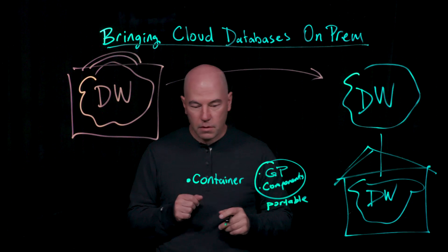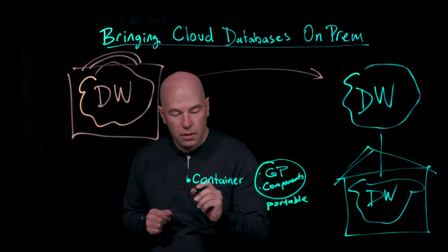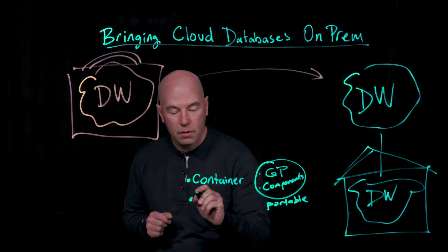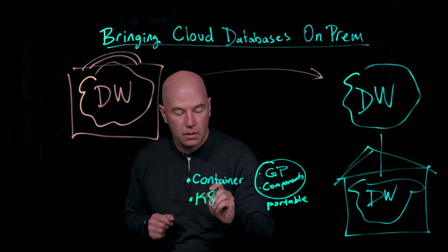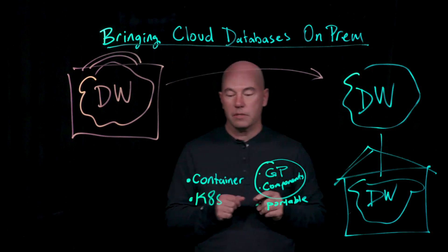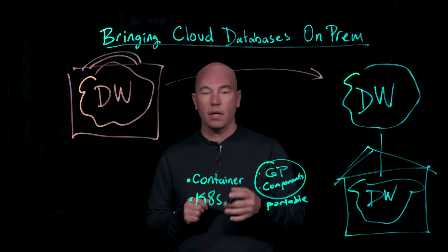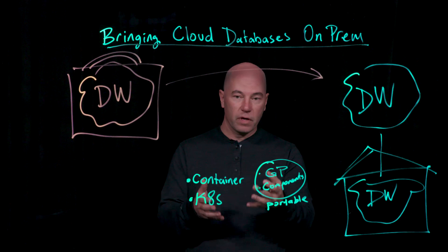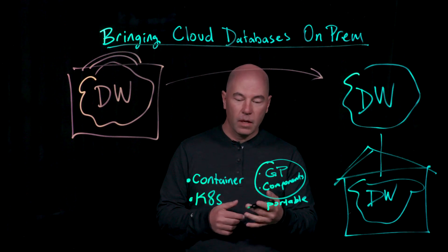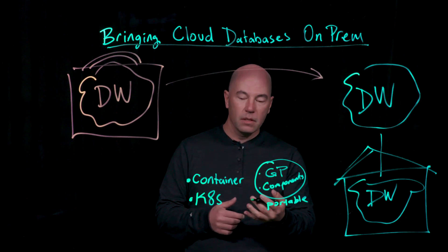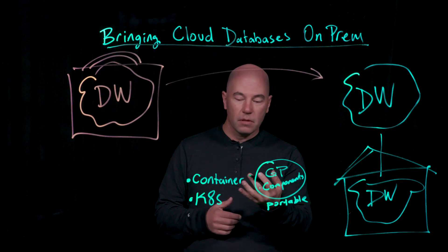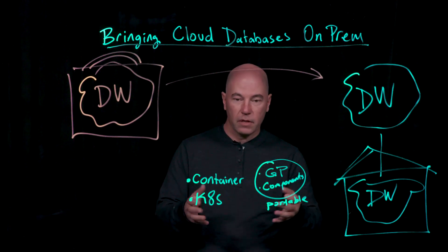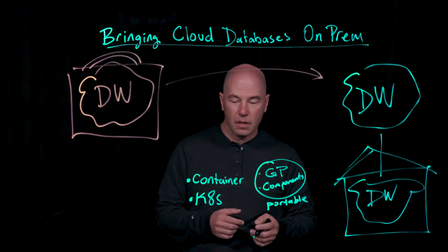The second big factor in bringing cloud databases on-prem is Kubernetes. Kubernetes is what manages and orchestrates these containers. It provides high availability and elasticity, and it is the fastest growing open-source project in history. A lot of IT organizations are standardizing on Kubernetes.